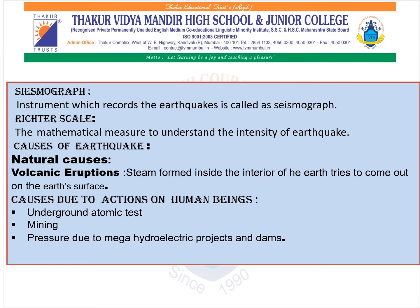Now coming to the next topic, that is seismograph. The earthquakes which are noticed on several parts of the earth — according to the observation of the National Earthquake Information Center, nearly 12,400 to 14,000 earthquakes occur on the earth. Seismograph is the instrument which records the earthquakes, and the Richter scale is the mathematical measure used to understand the intensity of earthquakes.